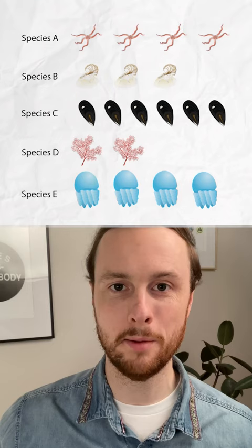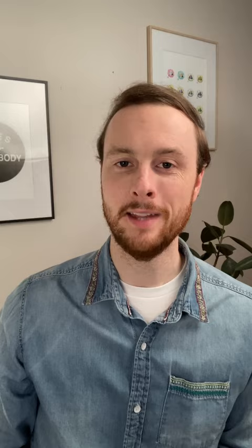Species diversity, which is broken down into species richness — or just the total number of different species in an ecosystem — but also evenness, or the relative proportion of the individual members of each species. And finally, genetic diversity, or the amount of genetic variation among individuals within a population.